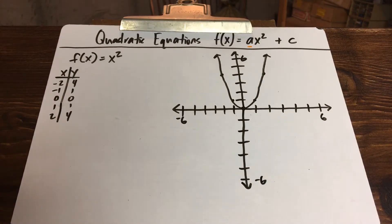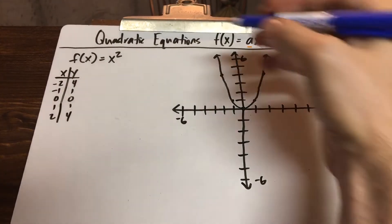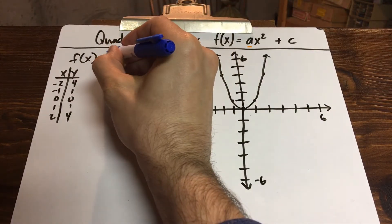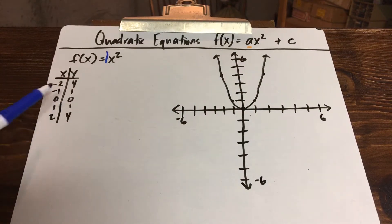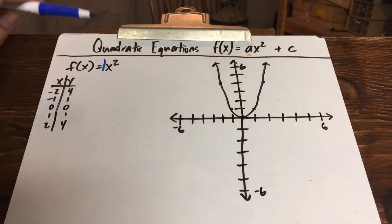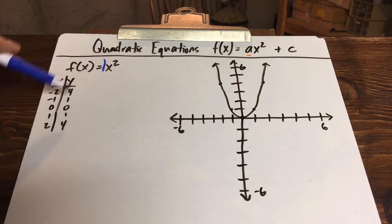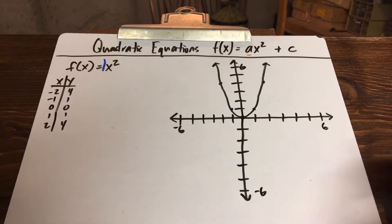Just as a quick refresher in case you didn't have a chance to check out my last video: the most basic form — called the parent function, the one that we compare everything to — is whenever the letter a is 1. I made a little input-output x and y table with easy numbers: negative 2, negative 1, 0, and 1. I plugged them into x squared, filled out the chart, graphed the points, and this is the parent function — the one we compare everything to.